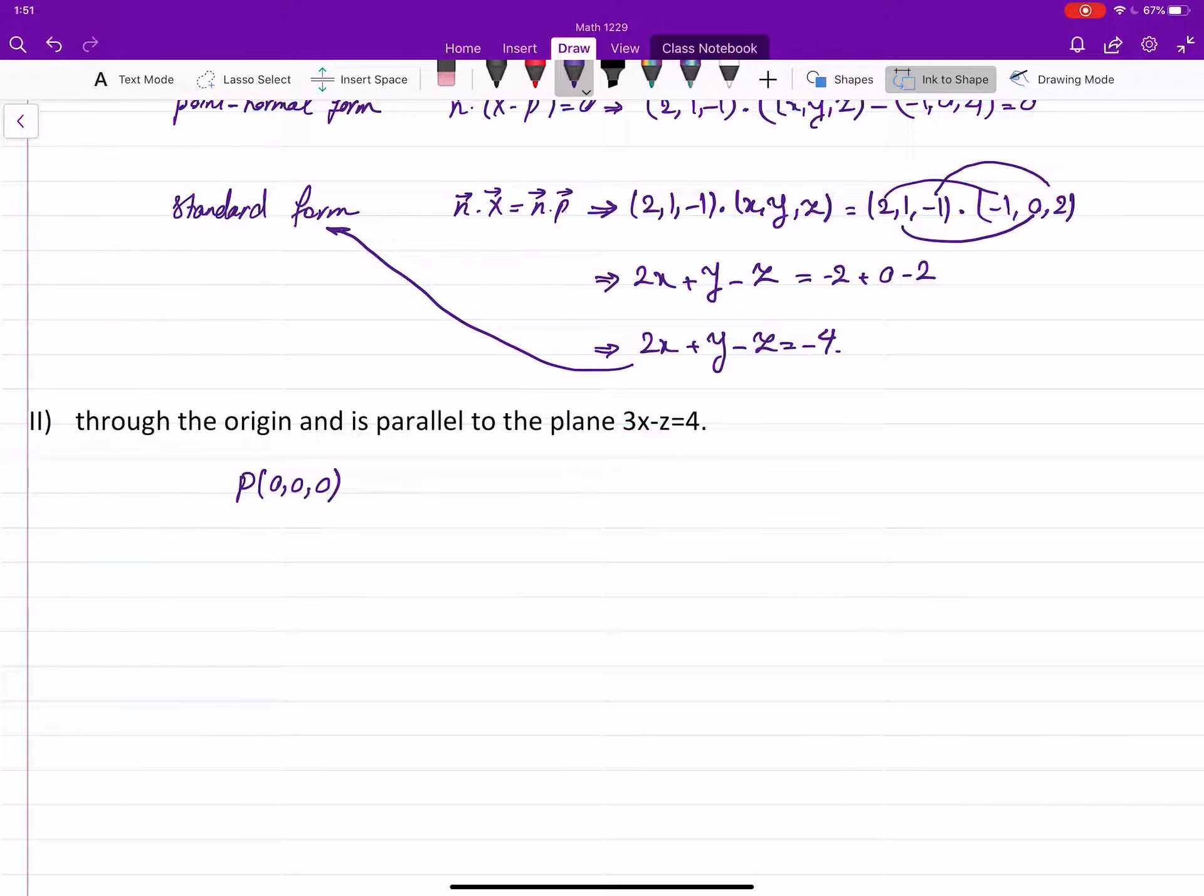And the plane is parallel to this plane, the plane given by 3x - z = 4. Remember, if two planes are parallel, then you can use any normal of one as the normal of the other one, because if something is perpendicular to one of them, it will be perpendicular to the other one.